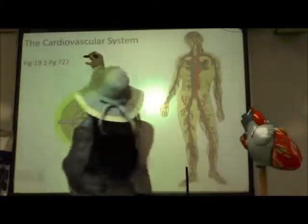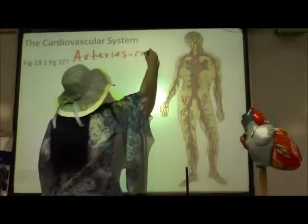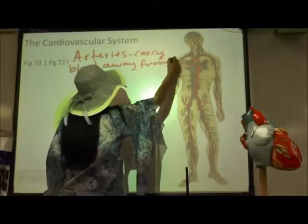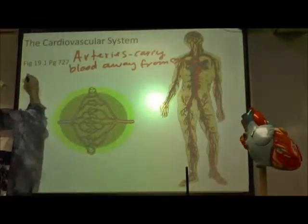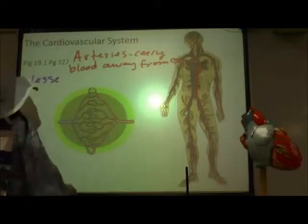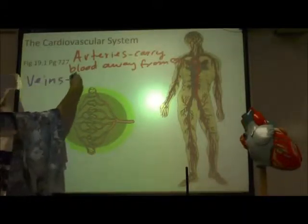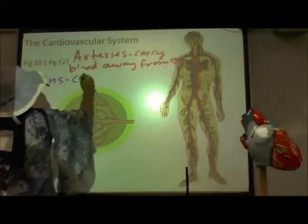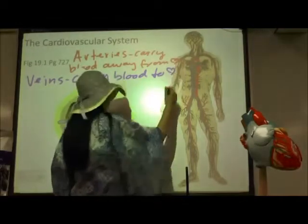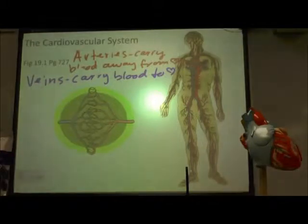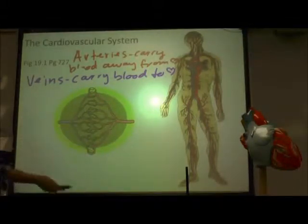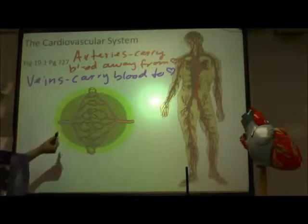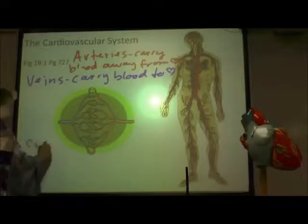Arteries are the blood vessels that carry blood away from the heart. Veins are the blood vessels that carry blood to the heart. Capillaries are where we have the exchange of nutrients and gases. We've got capillaries in the lungs where we drop off CO2 and pick up oxygen, and capillaries in all the tissue where we drop off oxygen and pick up CO2. So our capillaries we call the exchange vessels.